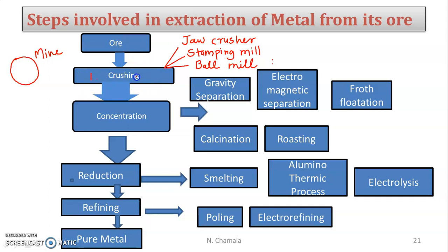So crushing is the first step of ore treatment. The ore begins as big lumps which must be converted to small stone size using the jaw crusher, then sent to the stamping mill to make a fine powder, and finally to the ball mill to get fine pulverized ore. This completes the crushing step.